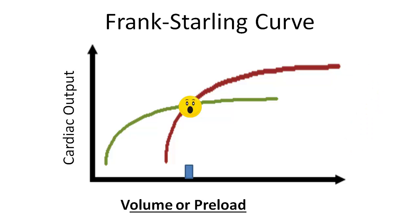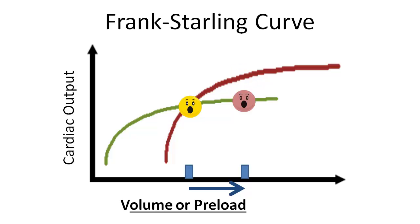If we can introduce a physiologic change that shifts the volume or preload and then measure the cardiac output subsequently, we can decide where the patient is on the Frank-Starling curve and whether or not they are volume responsive. That is the goal of stroke volume variability and non-invasive cardiac monitors, among other maneuvers further discussed in this case.